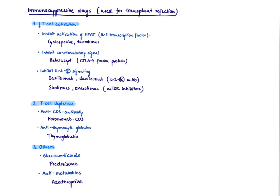So how can we stop T-cell responses in the setting of an organ transplant? One mechanism is to decrease T-cell activation. Another is to deplete the T-cells and simply kill them. And then there are several miscellaneous drugs that work by other means.